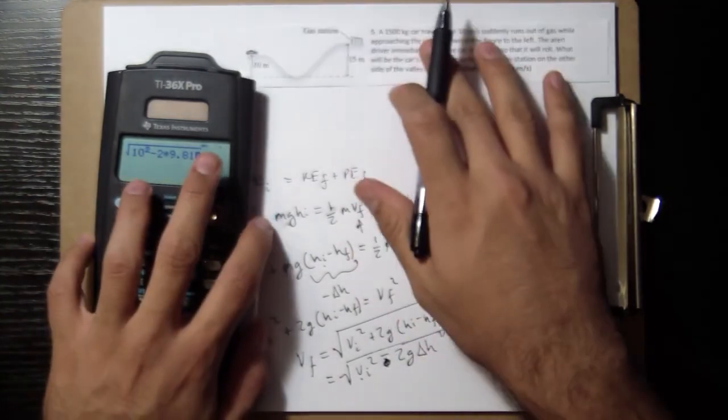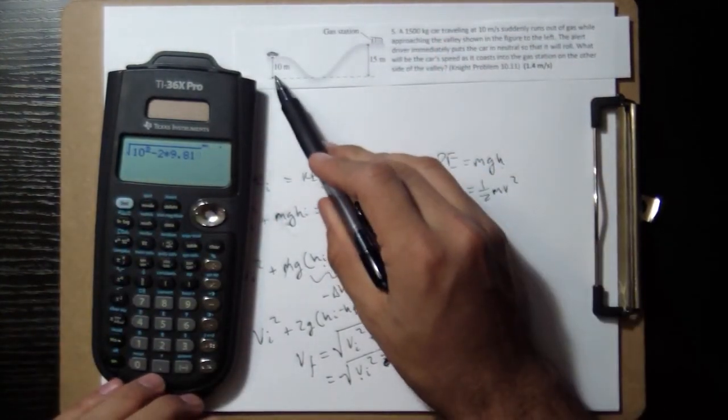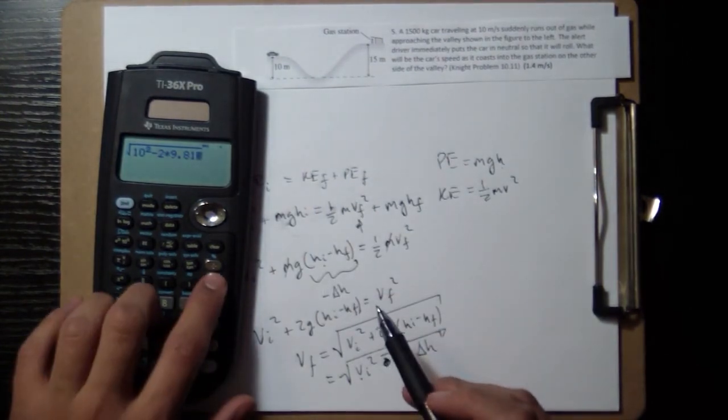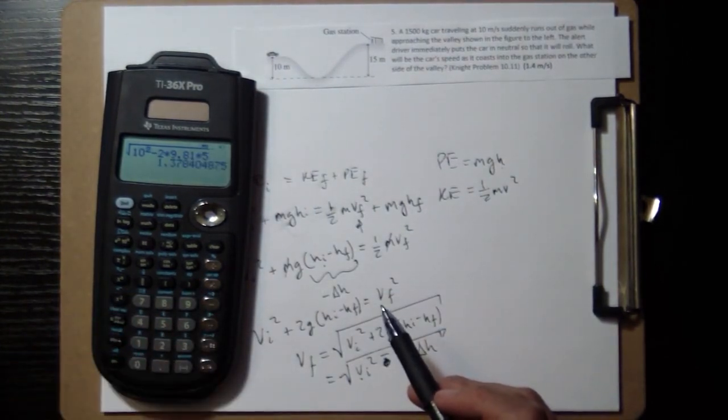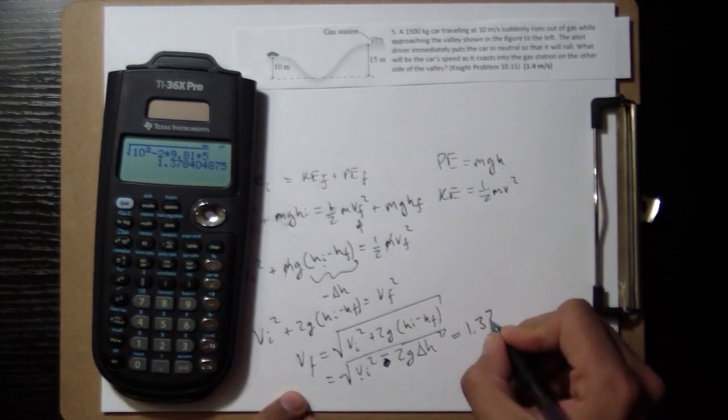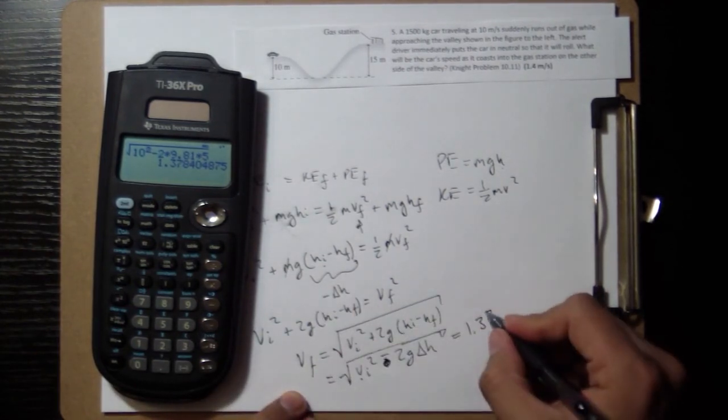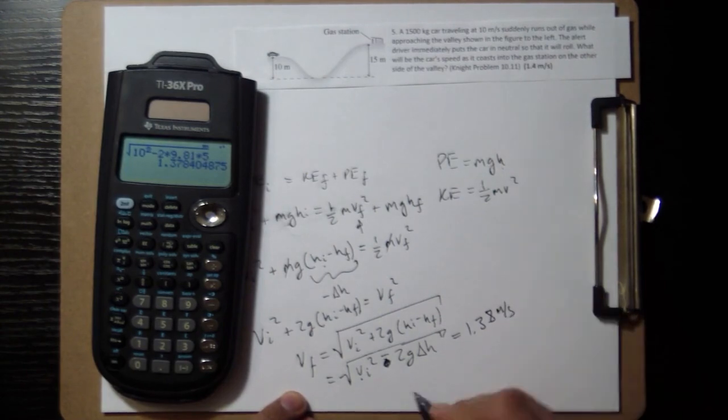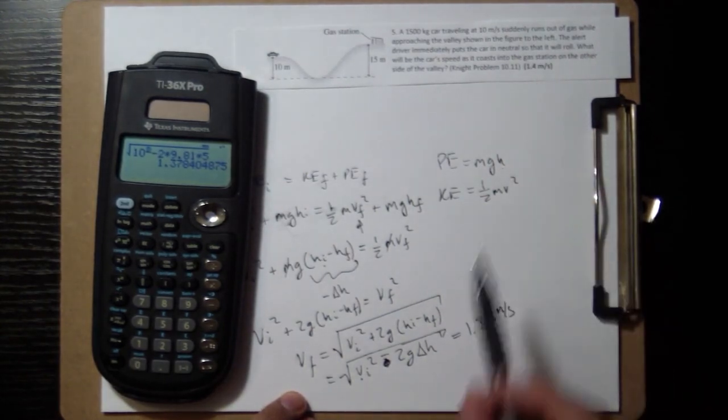I'm using the minus, so my change in height is up 5.5. So you have 1.37, rounds to 1.38 meters per second, which of course will round to 1.4, which is what we have for our answer.